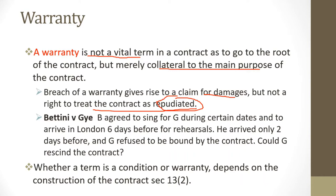To put this in perspective: if you buy a fridge and are given a warranty for two years, then after two months you discover a fault in the fridge, the best you can get is a claim for damages — you can never revoke the contract you entered into with that supermarket. The case to back up the definition of a warranty is Bettiny v. Guy.